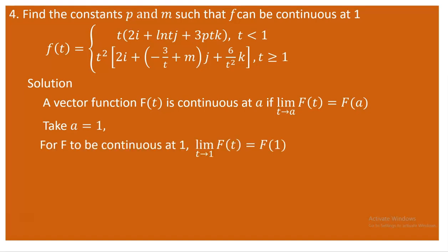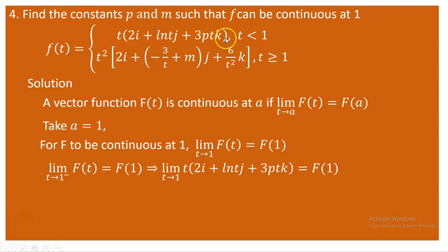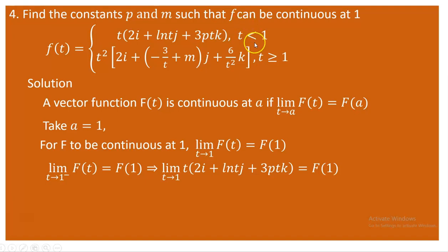Directly putting one into our expression, we have this. I use the limit approaching one from the left because f at one is already defined in the second expression. So I have to consider my limit analysis on the upper part. The limit exists at one because we can directly substitute. The scalar functions are defined on t, so the limit of f of t as t approaches one from the left uses the upper expression, since that is defined for t values less than one. This needs to be the same as f of one.